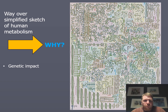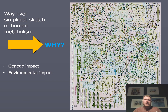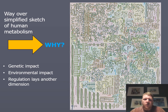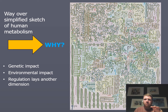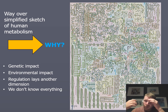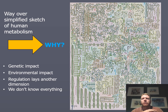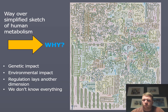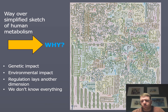This is important to know because you need to understand the genetic impact, the environmental impact, and the regulation that all of these different components and systems have on one another. What you see here is the well-known concept of central metabolism, but this doesn't show all secondary metabolism. This is specific to humans and gives an idea of all the different major molecules that are processed by the human body.